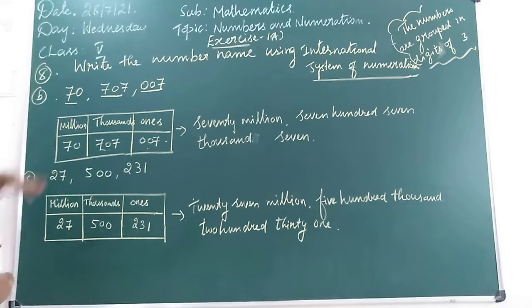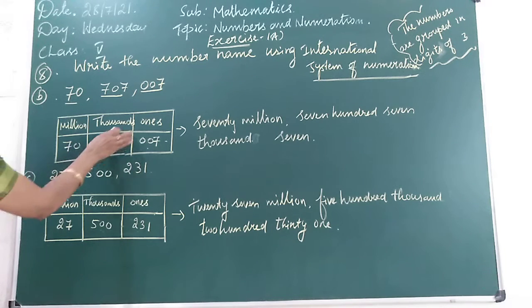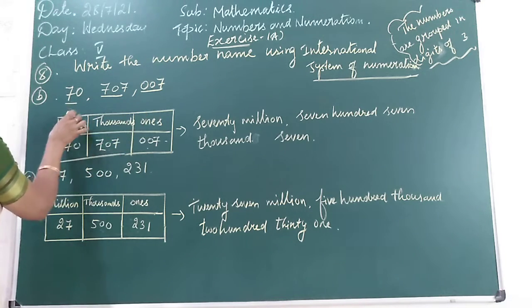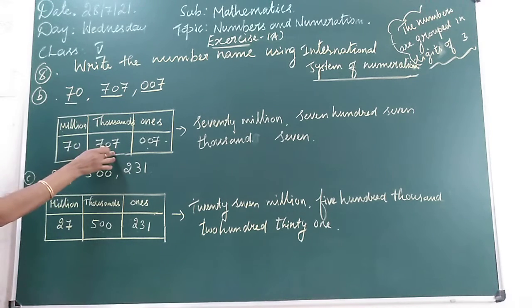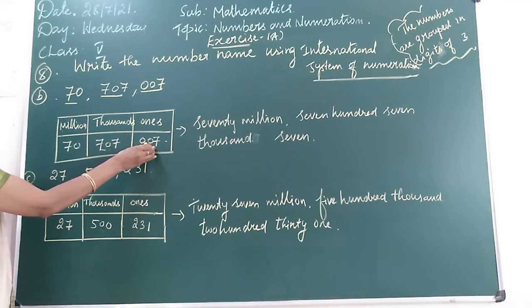Children, for that you have to write the numbers in place value chart. You write millions here, thousands, and ones. Enter the digits, children, according to the places. In the ones place we have 7.